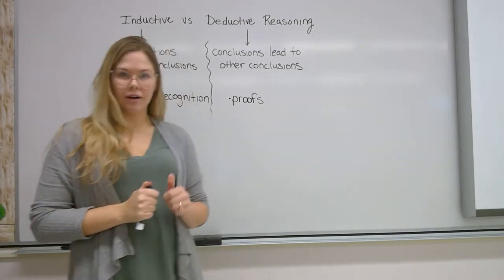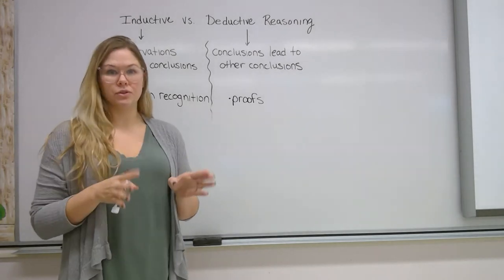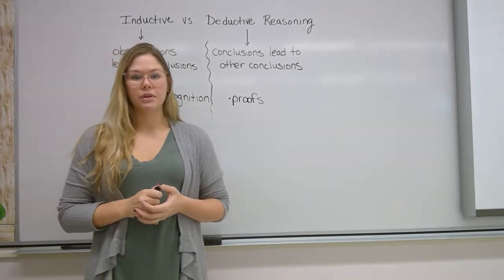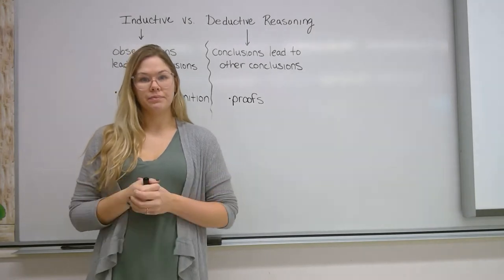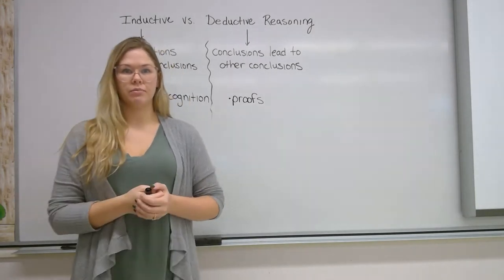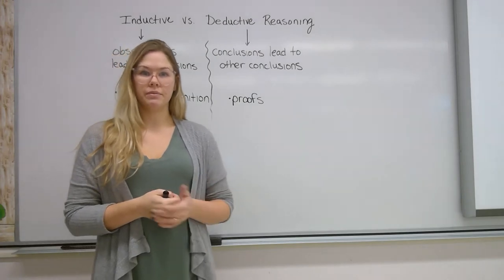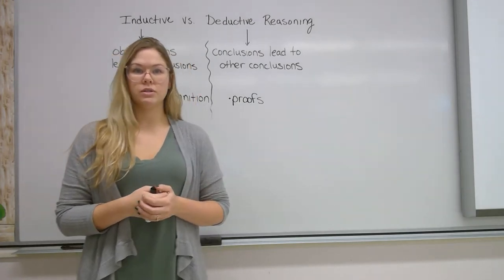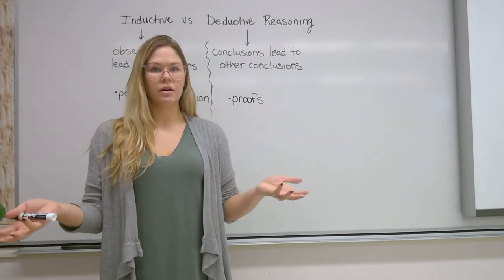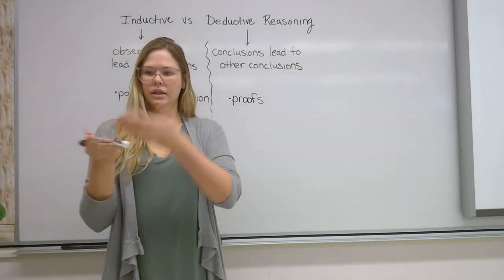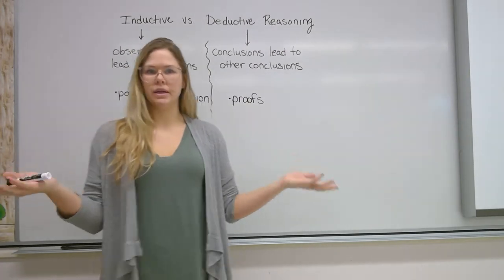Where we have to be careful with deductive reasoning is that we have to start with things that we know are absolutely true. Here's an example: eagles are a type of bird — we agree with that. My next statement is going to be that birds can fly. If we assume that's true, then my conclusion would be that eagles can fly. Eagles are a type of bird, birds can fly, so eagles can fly. Makes sense.